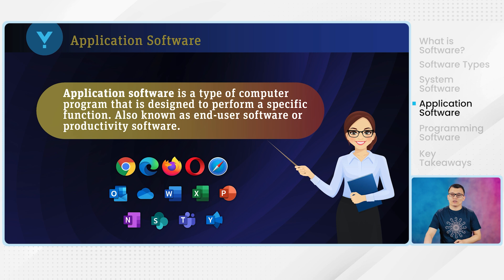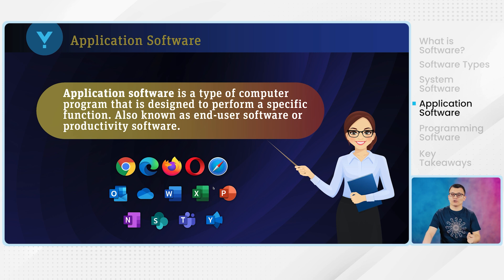For example, Chrome is an application software used to navigate to specific URLs and visit websites. Word documents and Excel sheets are used to type and edit text. Each application software serves its own specific purpose.